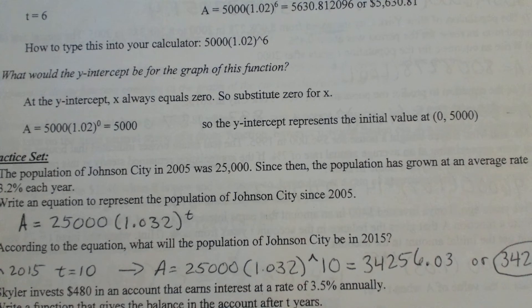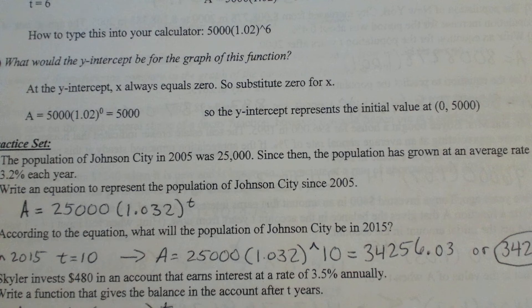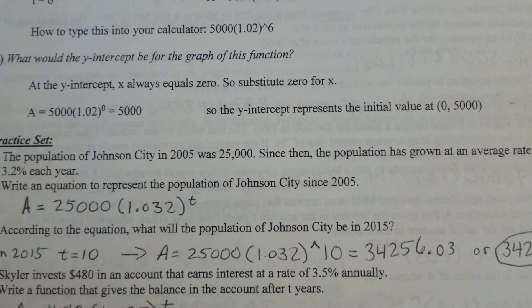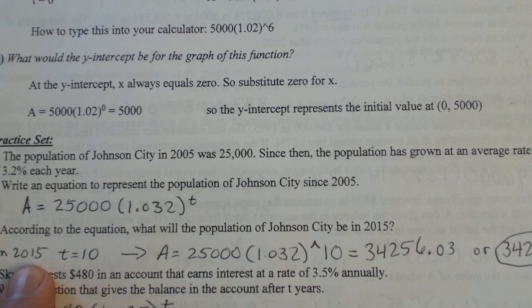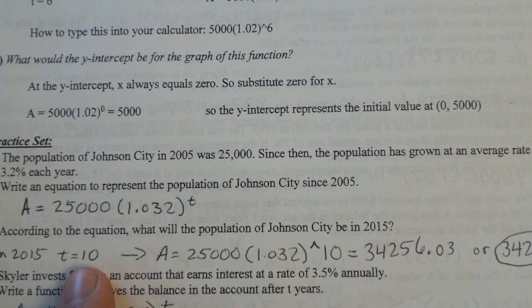And then it says part B, according to the equation, what is the population of Johnson City in 2015? Now remember, in 2015, it's 10 years after we started this equation. So you would plug in t equals 10, not t equals 2015. That's a little mistake that sometimes people make, but be careful with that.